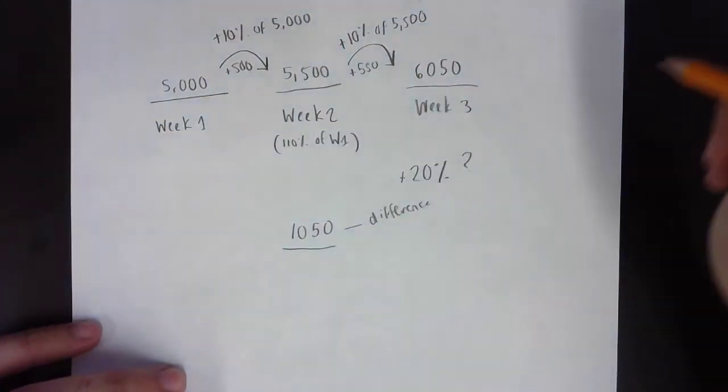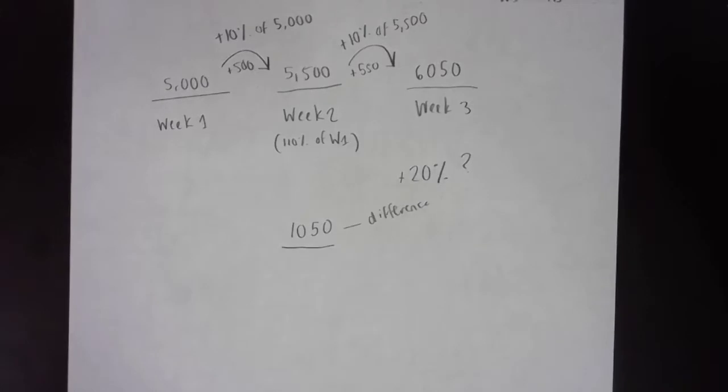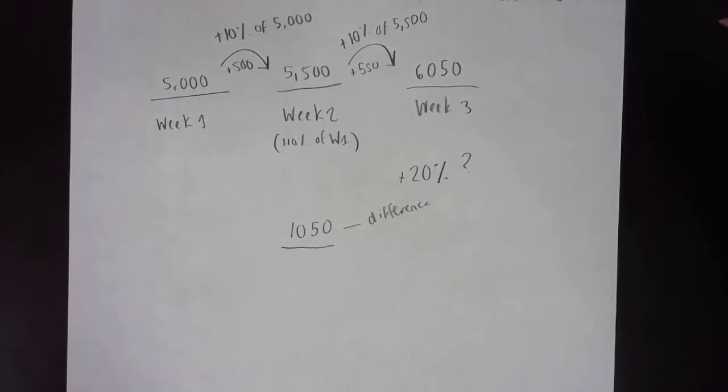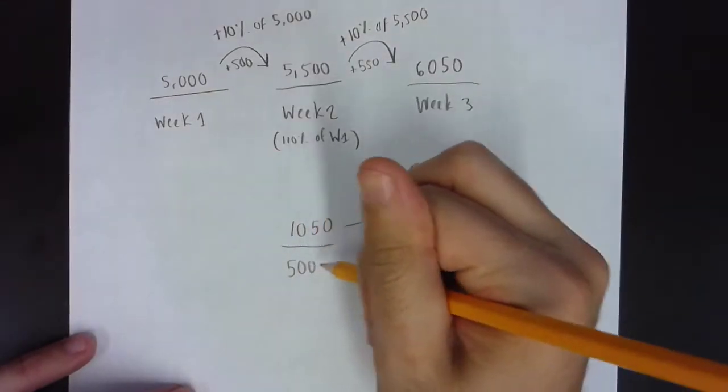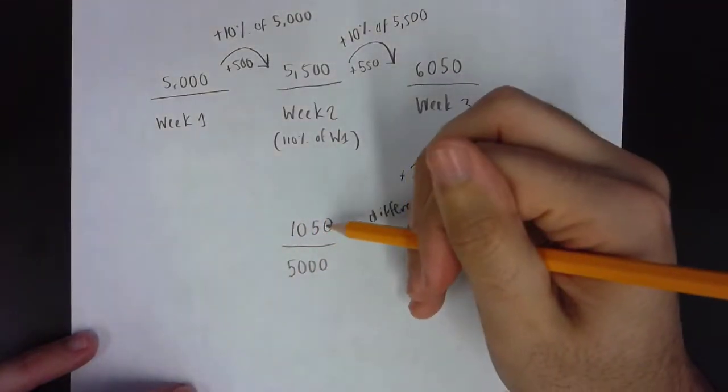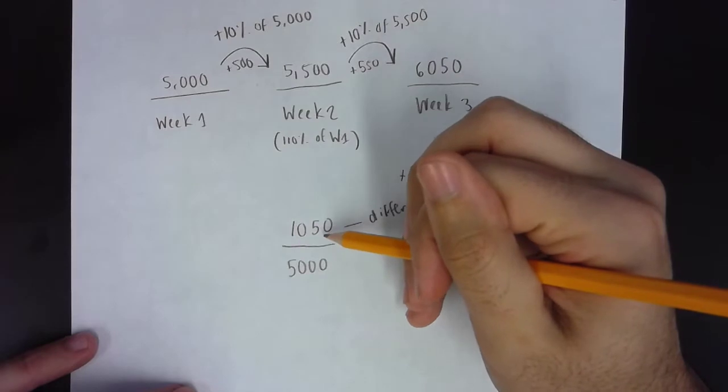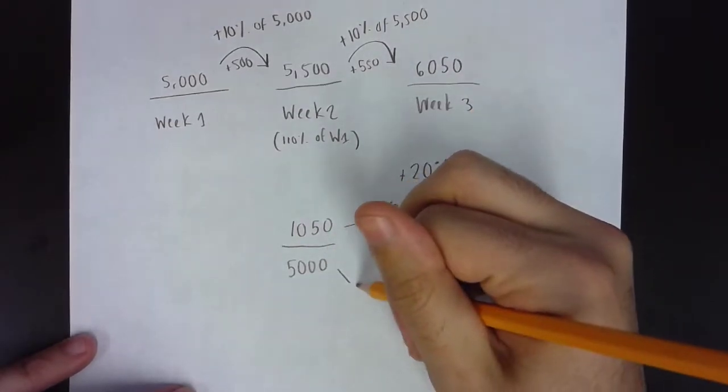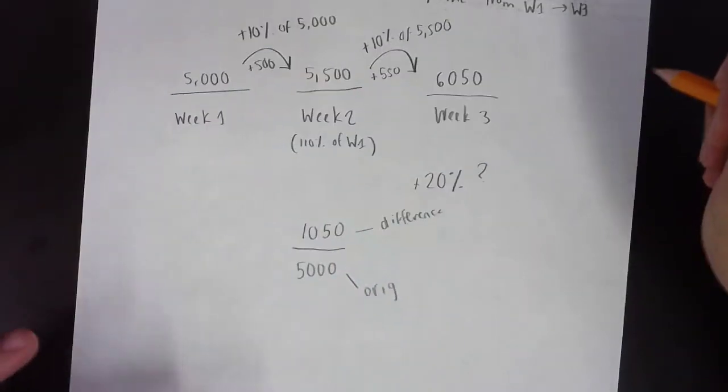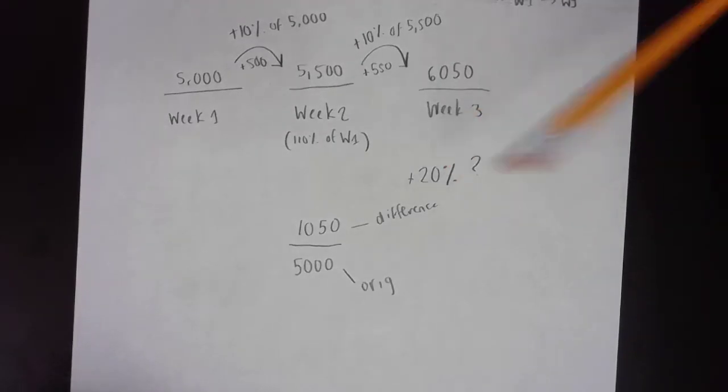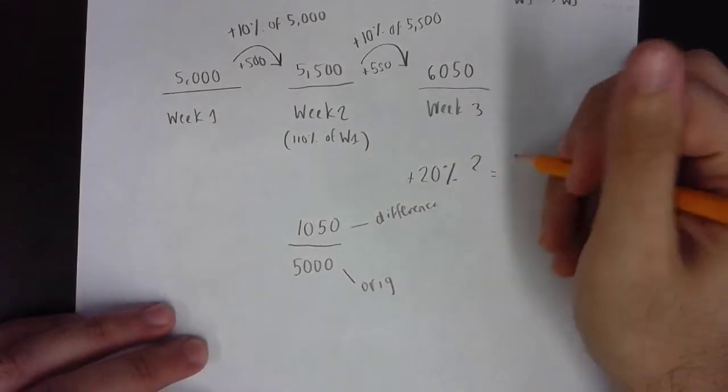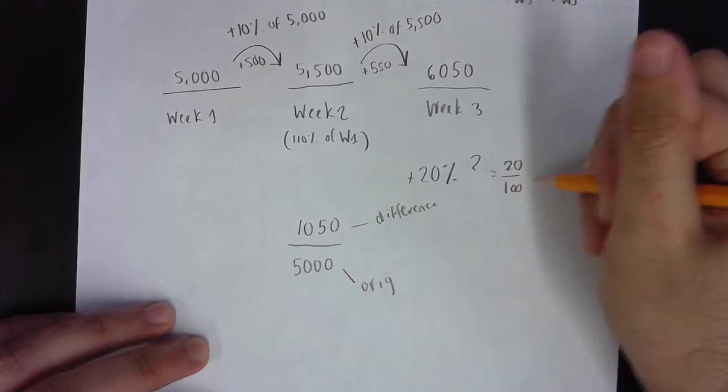Now, when you are finding a percent change, whether it's an increase or decrease, you are comparing it to the original. In this case, the original was the week one total, which was 5,000. And we need to find out what percent 1,050 is of our whole or our original of 5,000. Now, if you know, 20% is the same thing as 20 over 100, which is the same thing as one-fifth.